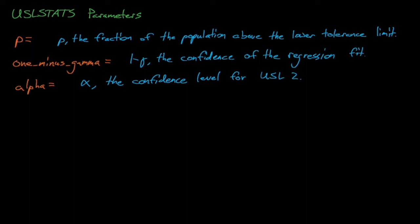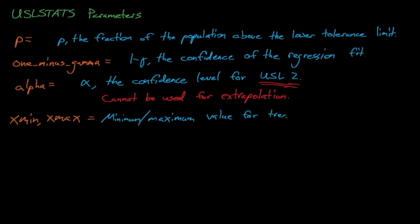Alpha is the confidence level for the less commonly used USL2 method in USL stats. The sensitivity-based USL estimates all require that we extrapolate the linear regression fit to some value of x beyond the range of our data. However, the USL2 method can only be used to interpolate data points. Thus, this USL2 method is used less frequently in criticality safety trending analyses.